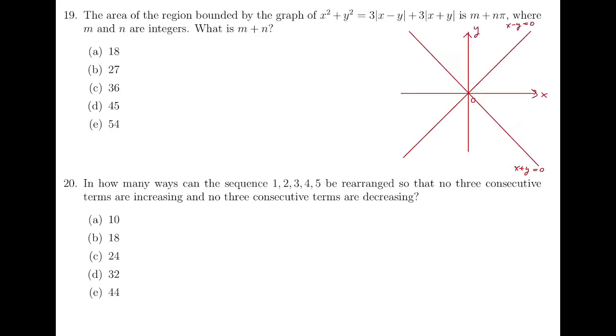Question 19, referring to the diagram, we split into cases. For this region, both X minus Y and X plus Y will be positive. We know this because we can test point, say, the coordinates 1, 0. Then in this case, X squared plus Y squared equals to 3 times X minus Y plus 3 times X plus Y.